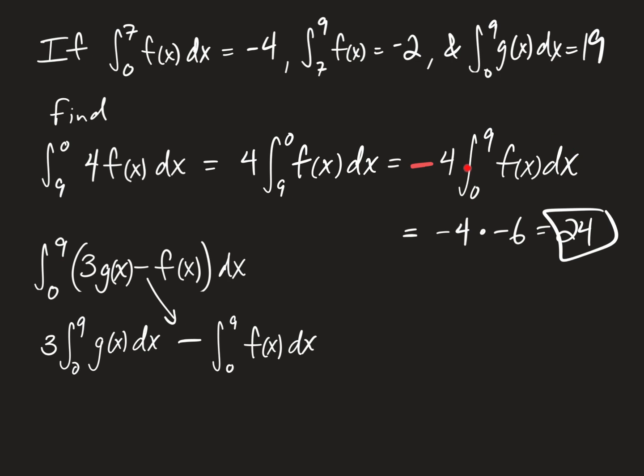Now, we learned from back here that the integral from zero to nine of f of x dx is negative six. So I can substitute that value in here. So this would be minus a negative six. The three would come along for the ride here. And the value for the integral from zero to nine of g of x dx is 19. So I can substitute a 19 here.